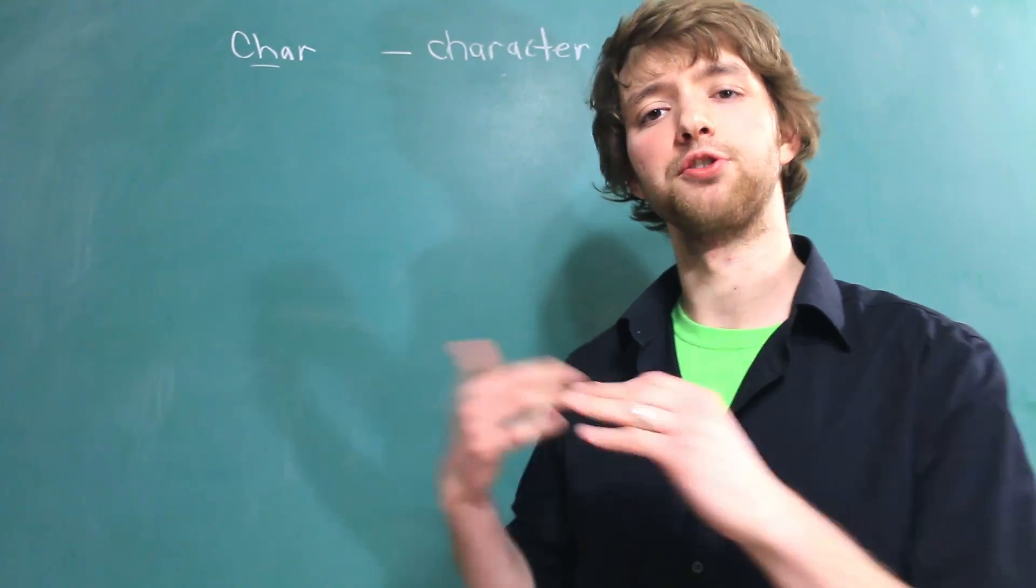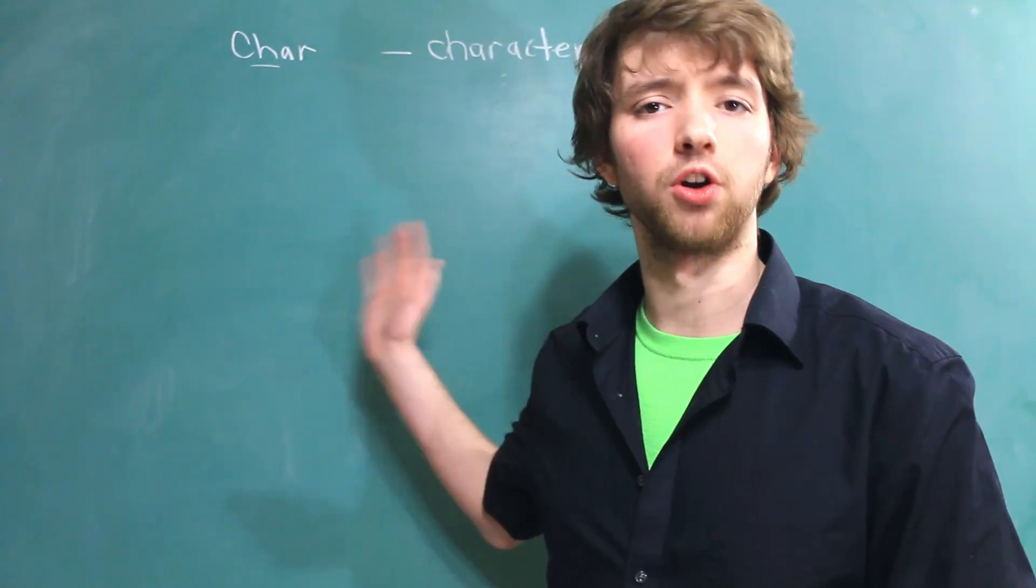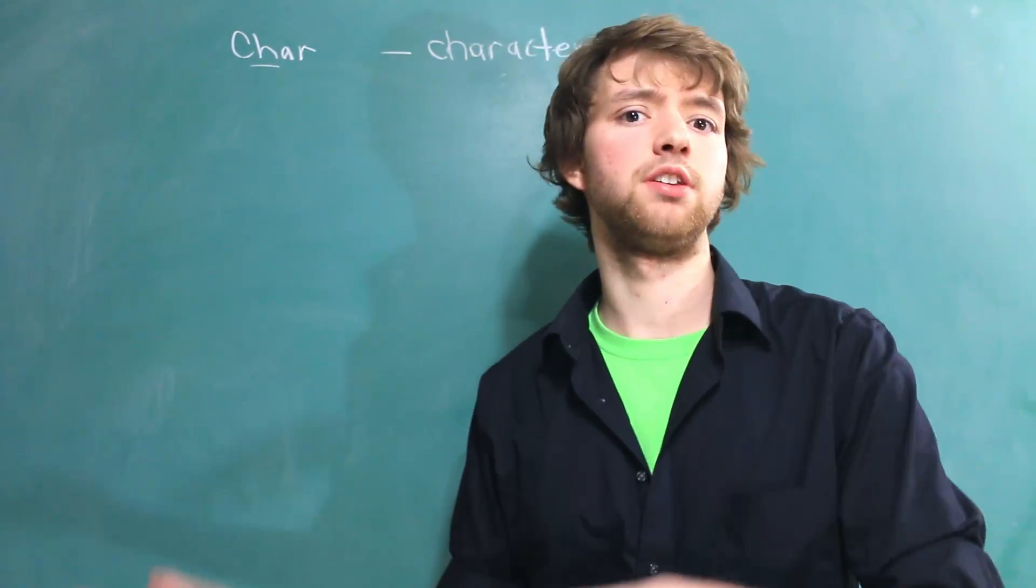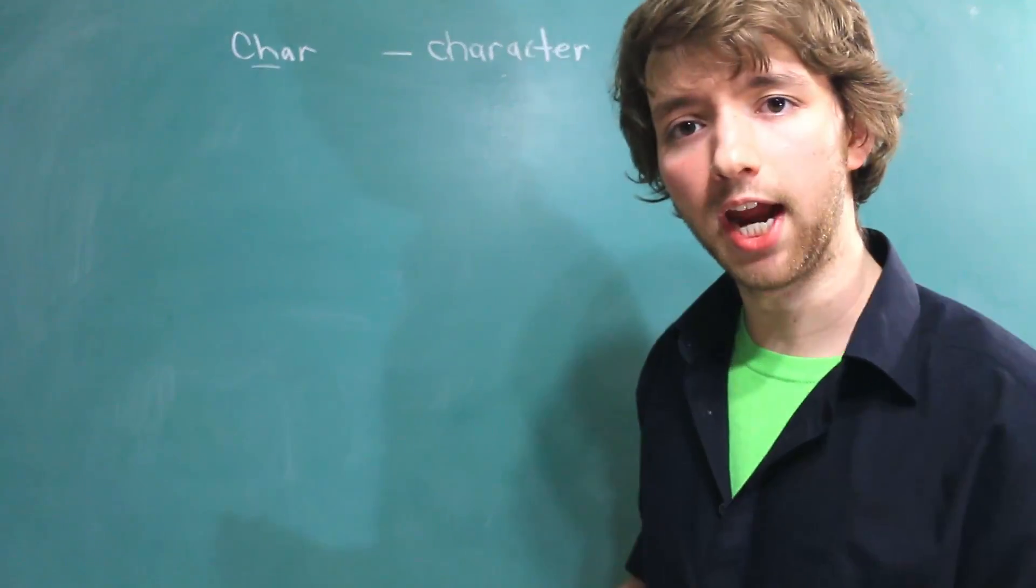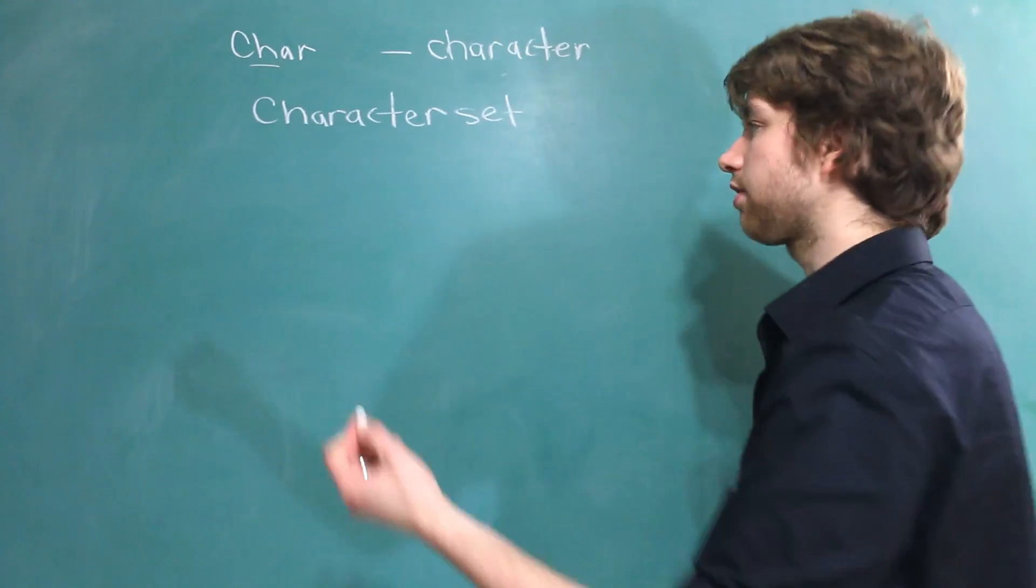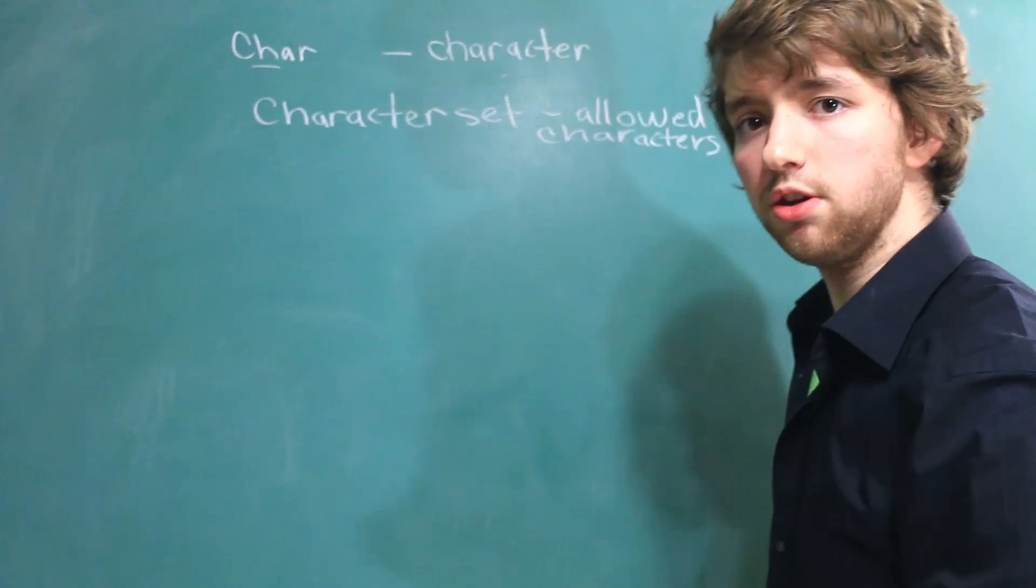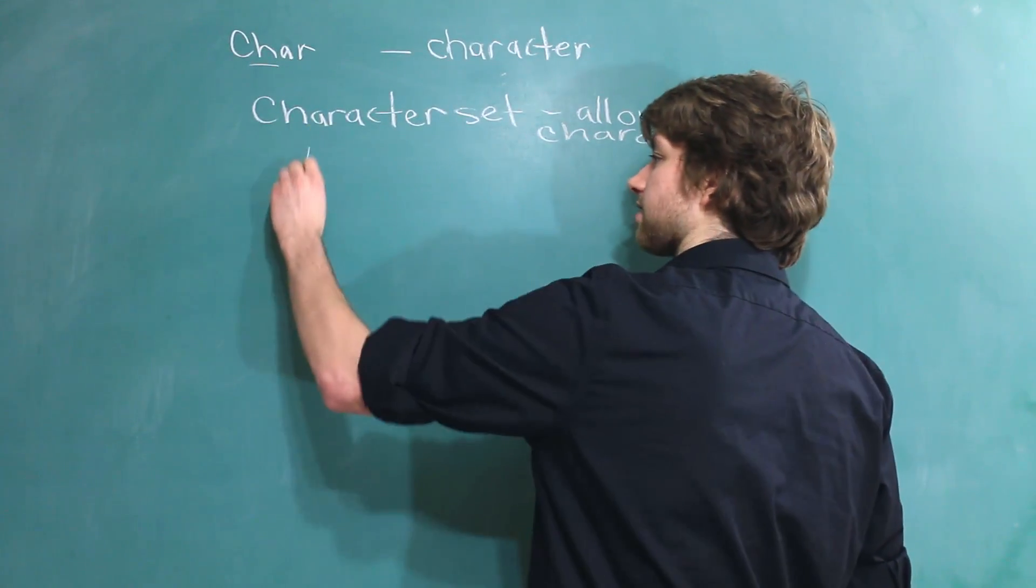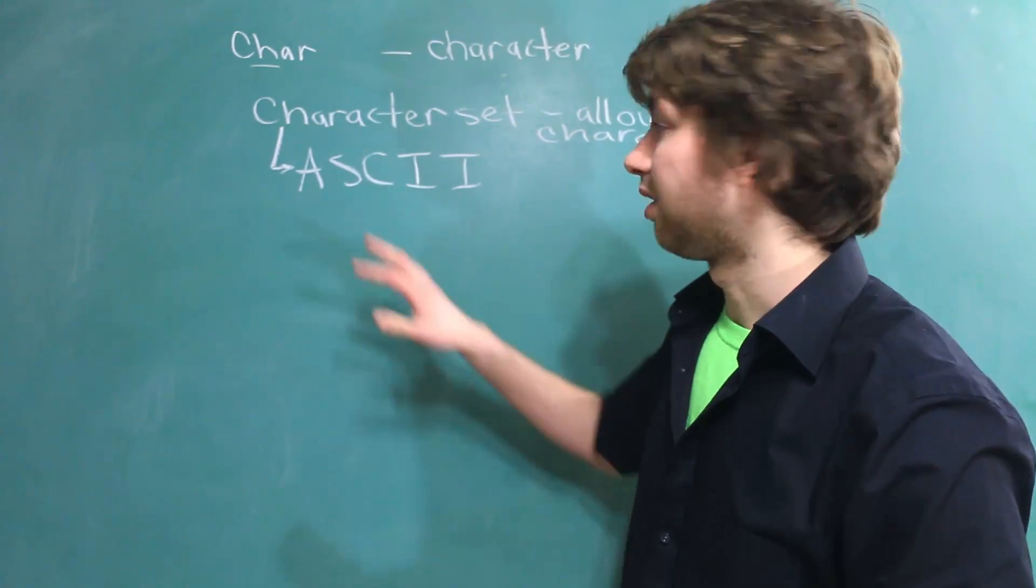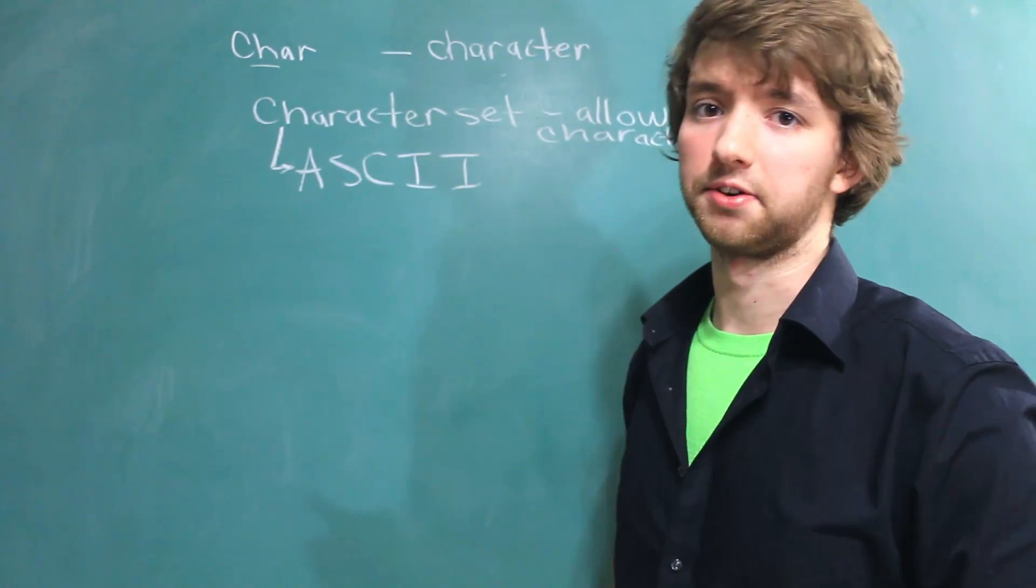Well, how do you know what characters are allowed? Like, I mentioned that most of the characters on the keyboard are allowed, but what about different languages and all that good stuff? Well, that has to do with what's known as a character set. Now, the character set is the allowed characters. And the character set we use when we are using C is a very limited character set known as ASCII. Now, if you want, you can look up ASCII and figure out the characters that are allowed in this character set.